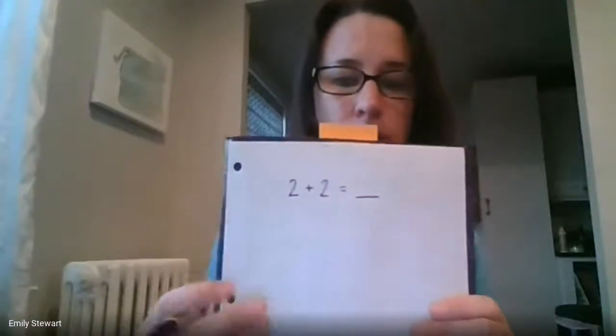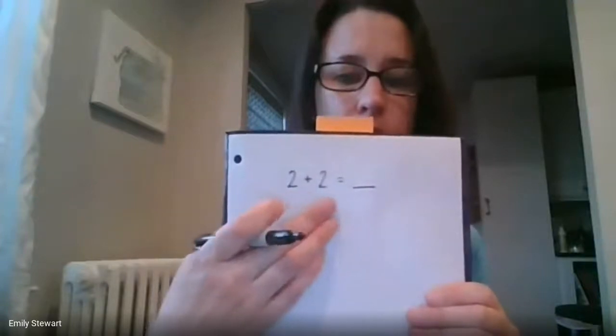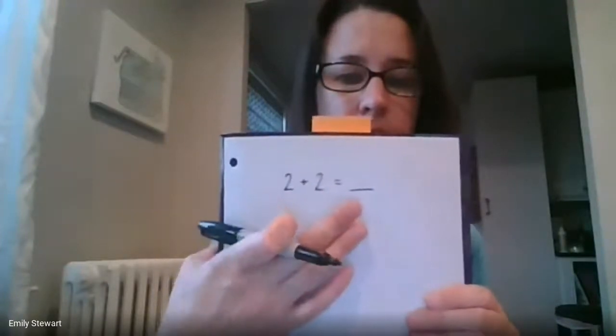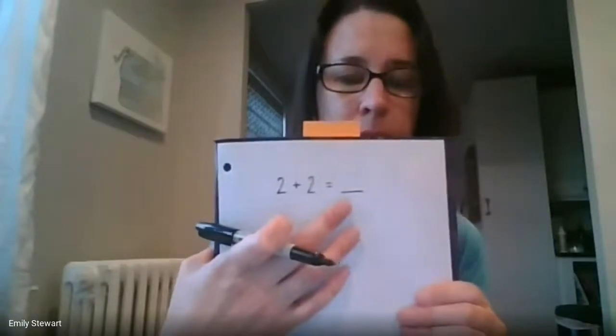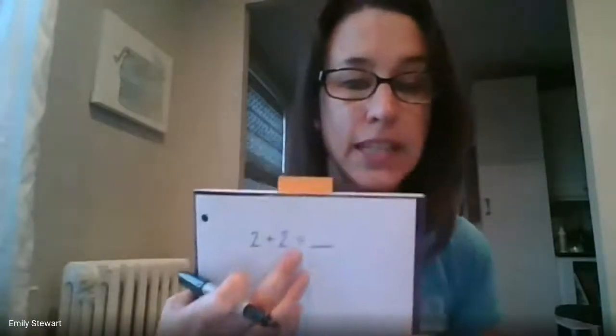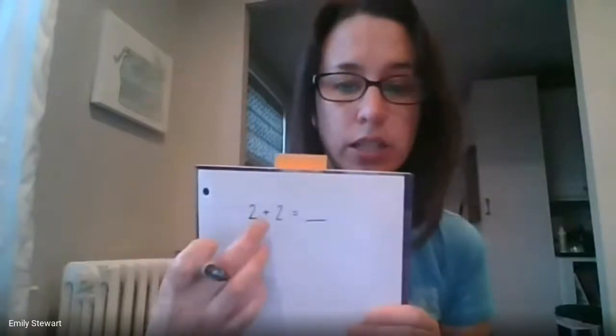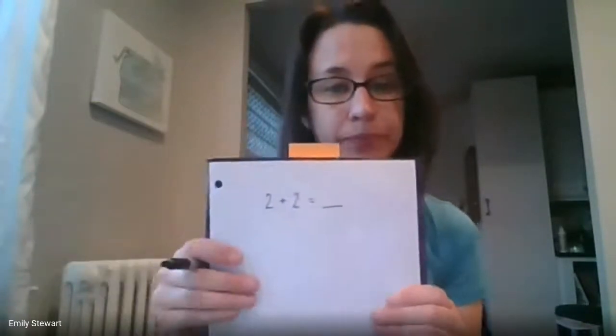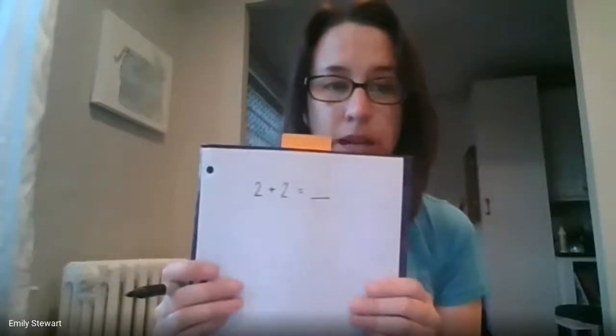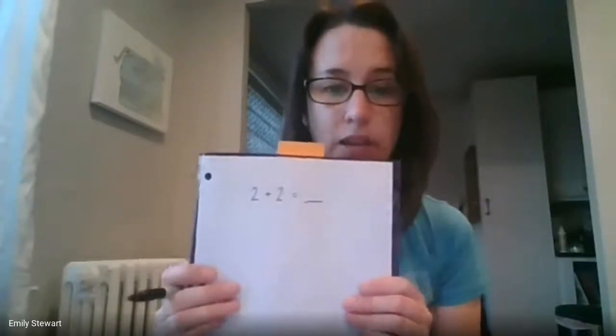Okay, so for example, if I start here, two plus two equals blank. What goes in that blank? Remember the equal sign means the same as. So two plus two is the same as what number? I'm going to give you a minute to write that down before I write the next one.